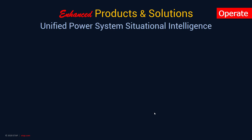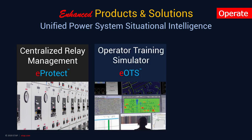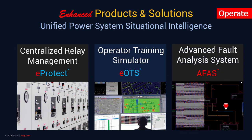As we transition from design to operation solutions, we can look at enhancements for unifying power system situational intelligence. eProtect, a centralized web-based protection and asset management solution, has been enhanced to offer change management for relay settings, managing asset location and information, and managing protected device settings throughout the lifecycle of relays and substation assets. Electrical OTS (operator training simulator) has been enhanced to improve operator training through real-world learning and evaluating contingency response for steady state and dynamic scenarios.